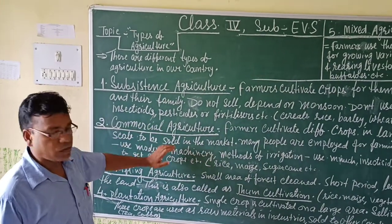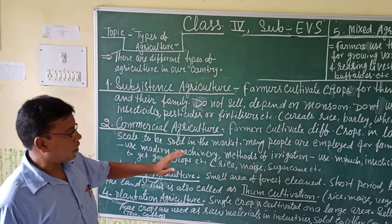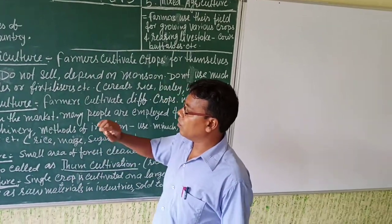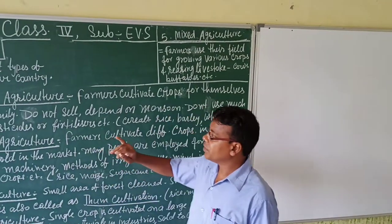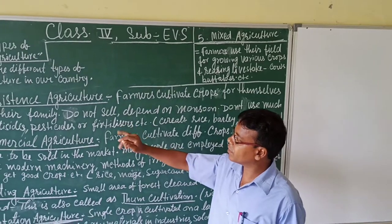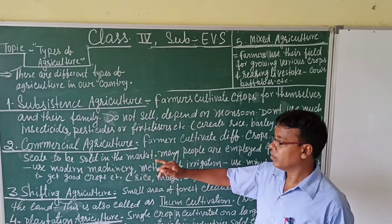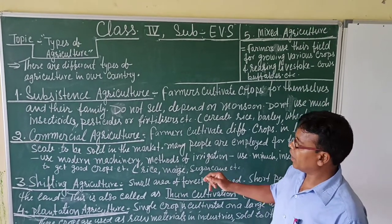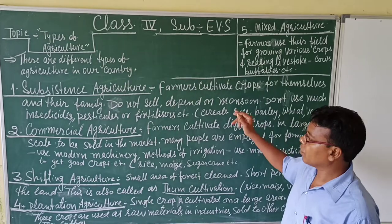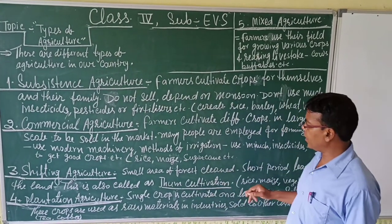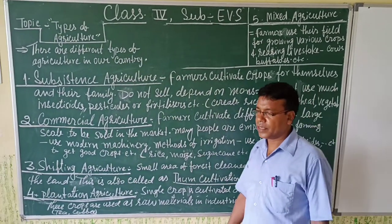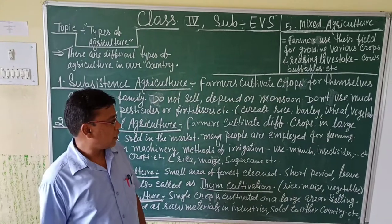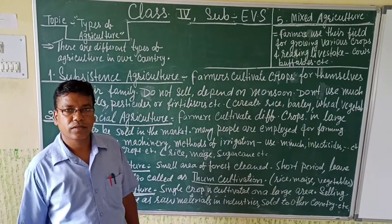Dear students, now we have seen the different types of agriculture and all the kinds of methods used in our country. I believe that you now know about the different types of agriculture and how farmers use these methods to cultivate crops. So here I end my class. Thanks. Bye.